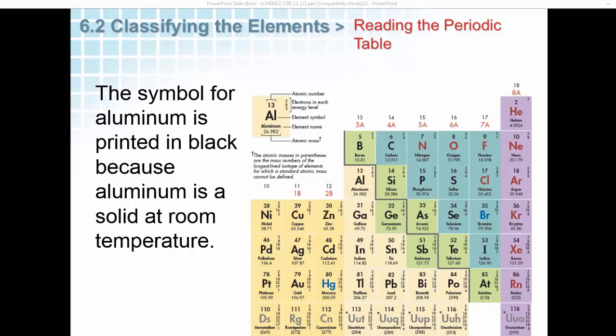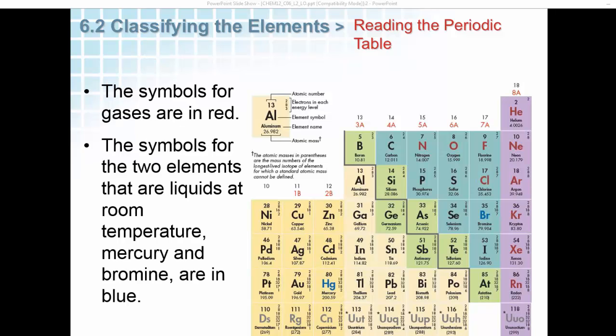The symbol for aluminum is printed in black because aluminum is solid at room temperature. The symbols for gases are in red. The symbols for the two elements that are liquids at room temperature, mercury and bromine, are in blue.